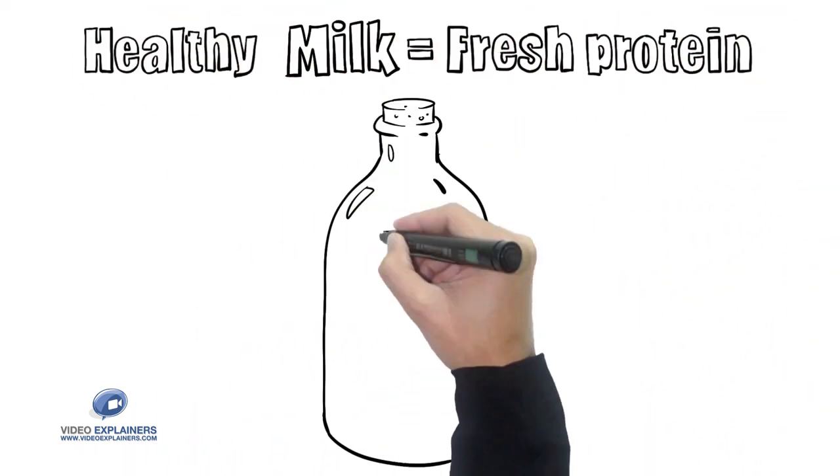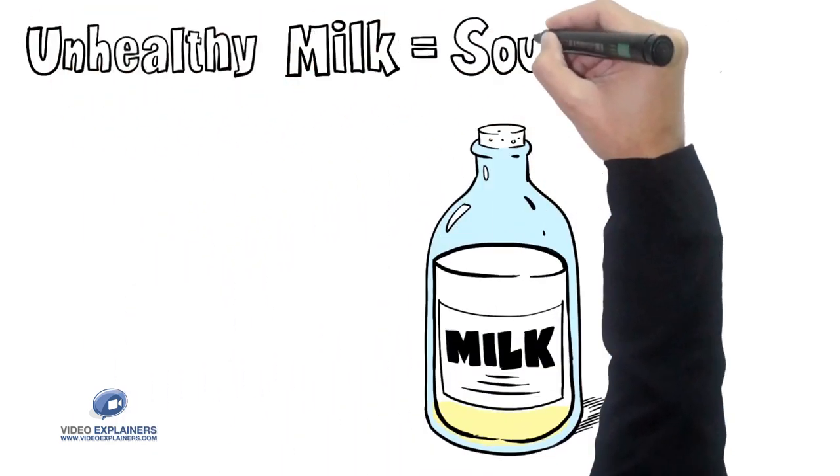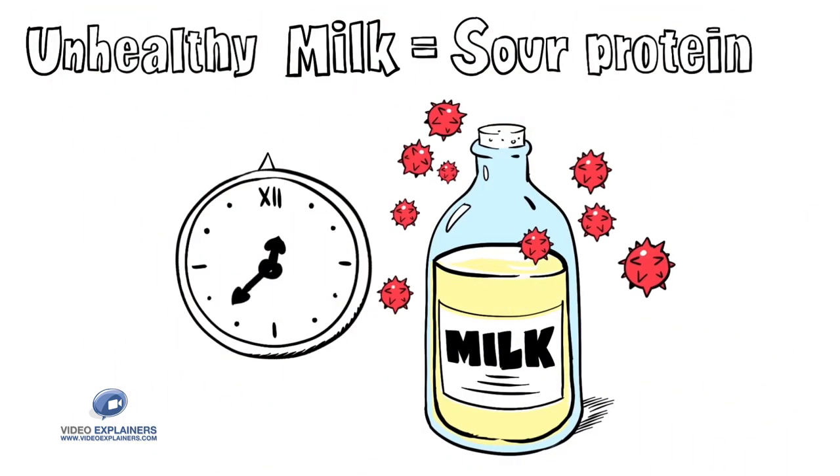Milk, which contains protein, is healthy when the protein is kept fresh. But when protein turns sour over time, the milk becomes unhealthy.